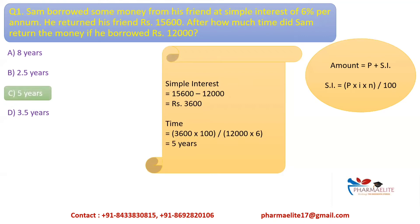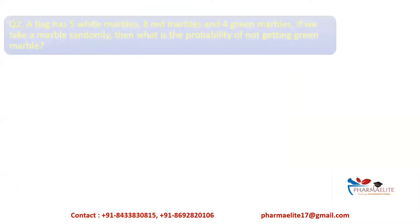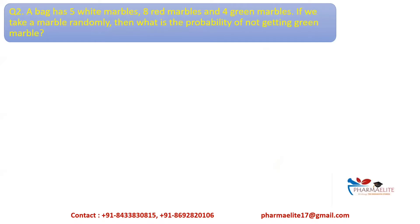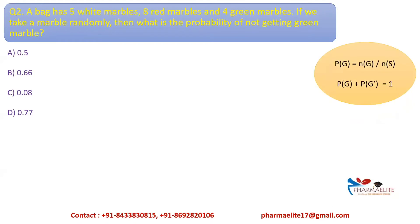Moving on to the next question: A bag has 5 white marbles, 8 red marbles and 4 green marbles. If we take a marble randomly, what is the probability of not getting a green marble? The formula required is P(G) = N(G) / N(S), that is, probability of event G equals number of elements in G divided by total elements in the sample size. The second formula is P(G) + P(complement G) = 1.